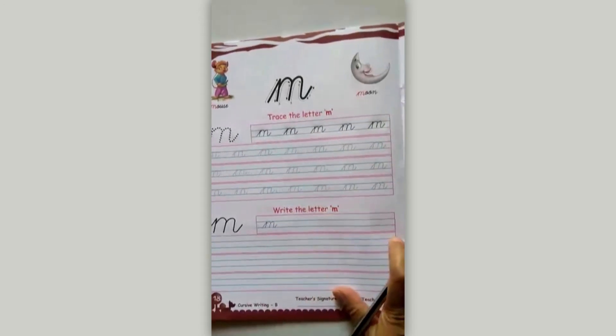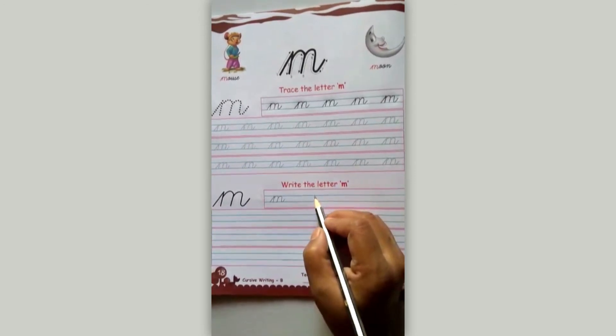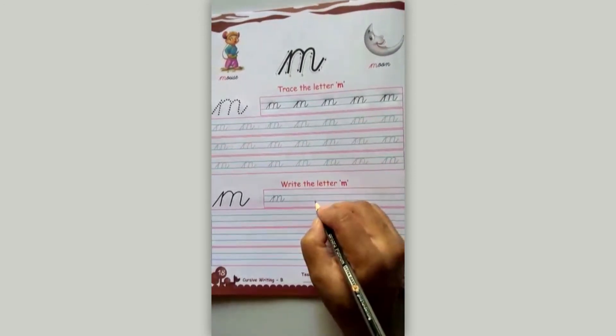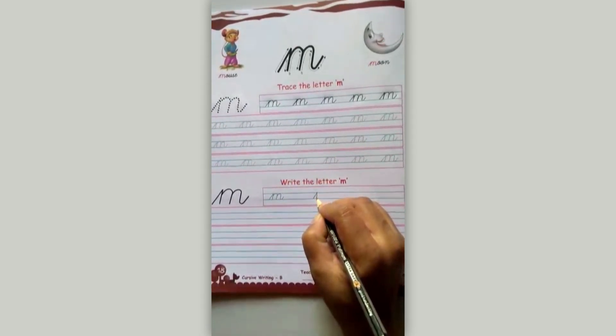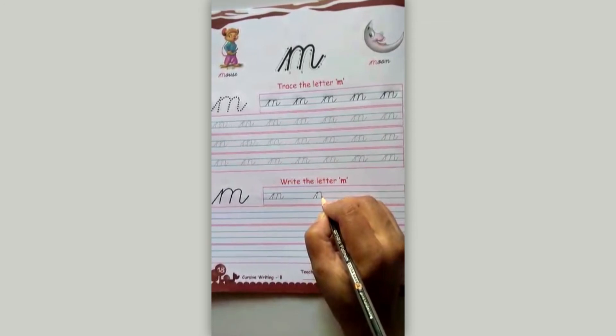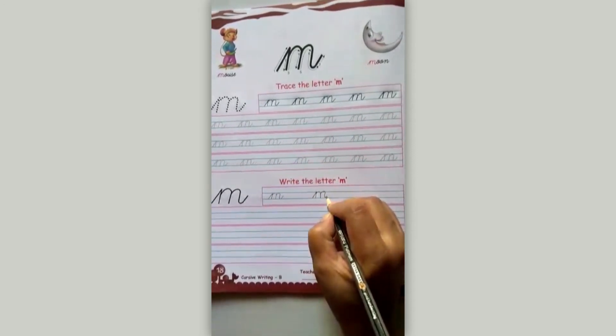Now we'll make it on the given lines. From third line we'll start writing M. 1, 2, 3. A small slanting line. Press the second line. Come down. Go up on the same line. And a curve like this. A middle line. And again a curve like this. And this.